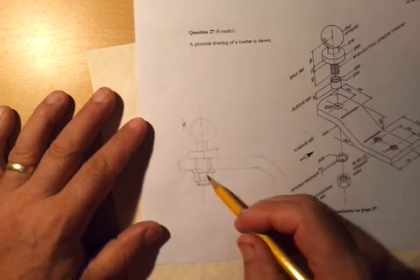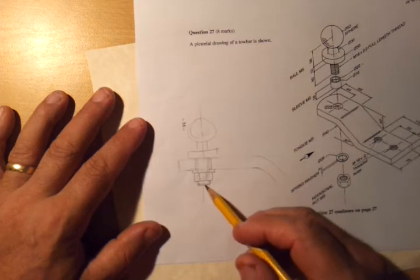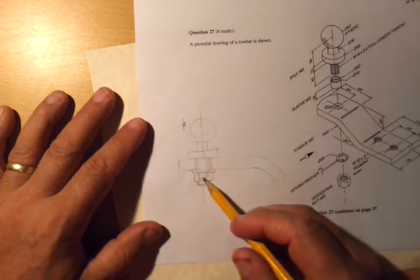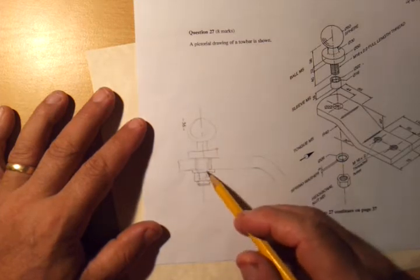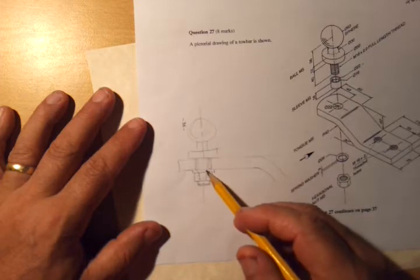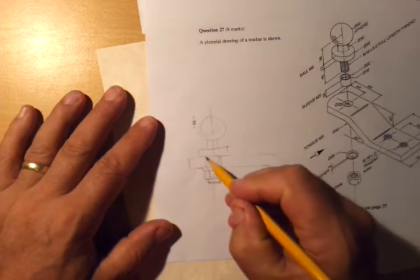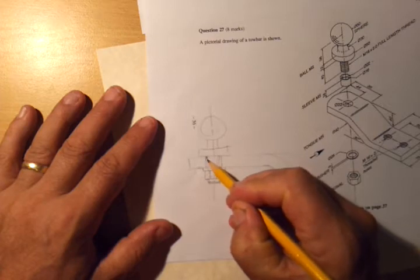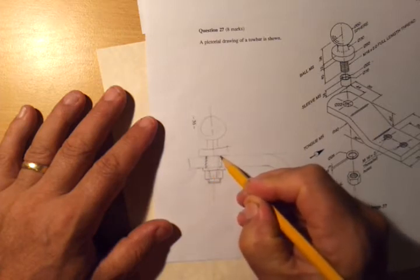So we know that we don't section nuts, we don't section threaded bolts, we don't section shafts, we don't section washers. So what are we sectioning? Well, we're going to be sectioning this little collar here. So that's going to be sectioned, that little collar.